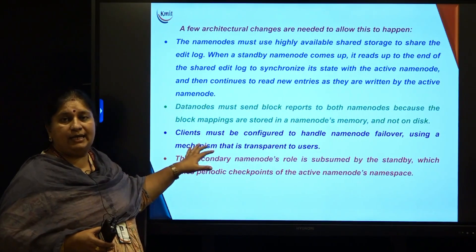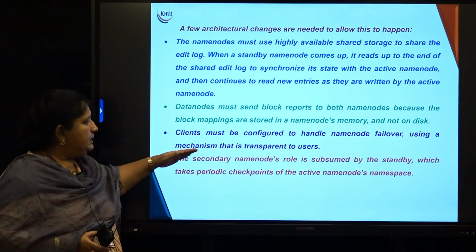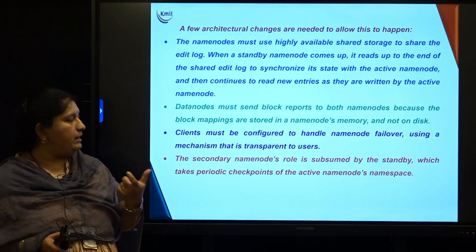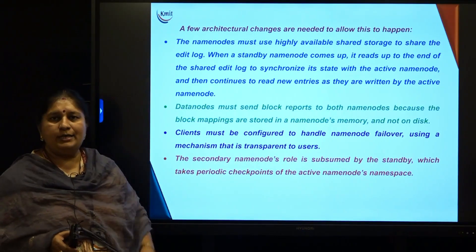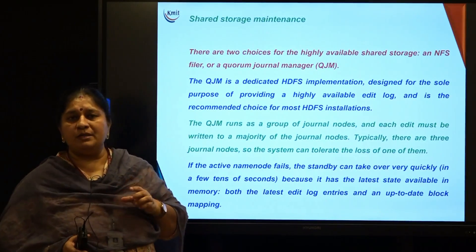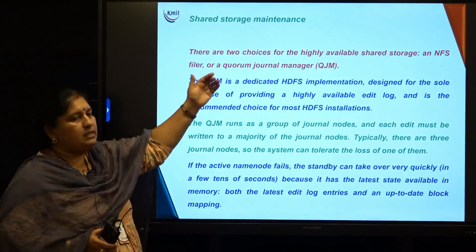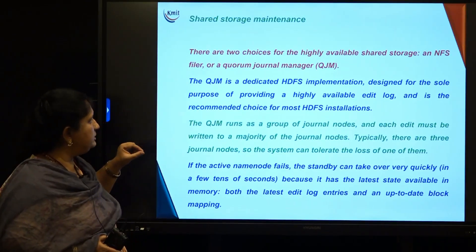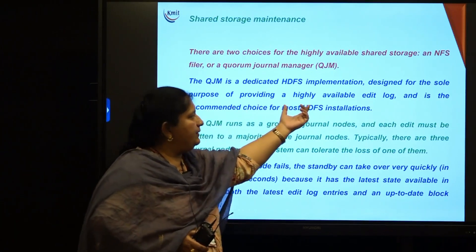Clients must also be configured to know that a standby name node exists, so in case of primary name node failure, the standby comes into operation. The standby also subsumes the secondary name node role — we can say the standby acts as a secondary name node. The secondary name node periodically takes checkpoints and updates its log and status. Both the primary and standby name nodes must share a memory space, which can be implemented in two ways: NFS filer, or QJM — Quorum Journal Manager.